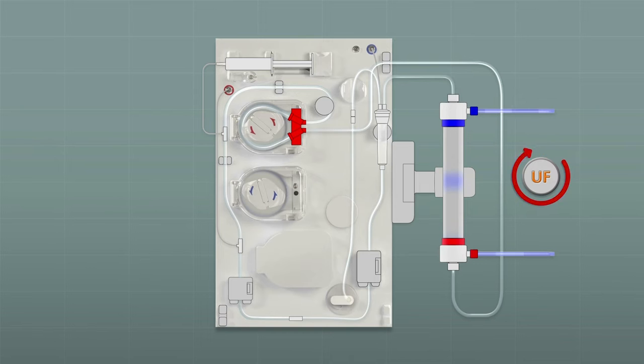The UF pump starts rotating in reverse direction and instead of removing fluid it is now delivering dialysate into the bloodline through the dialyser which acts as a second endotoxin filter.